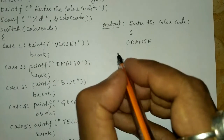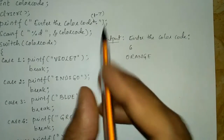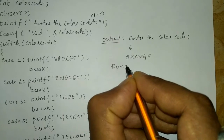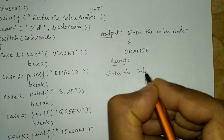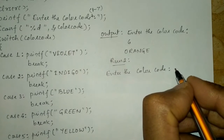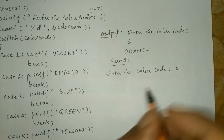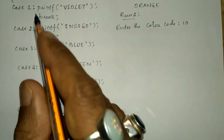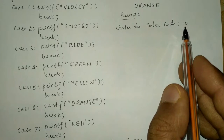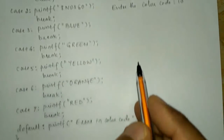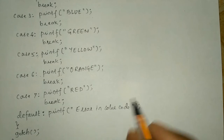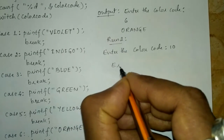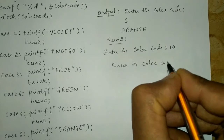What if the user enters a number other than one to seven? We run the program again. It asks for the color code between one to seven. For example, I enter 10, which is not present in any case label — we only have case one to case seven. In that situation the default statement gets executed, printing the message 'error in color code'.